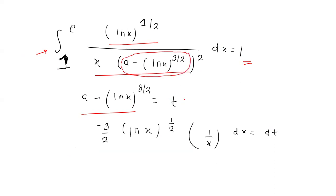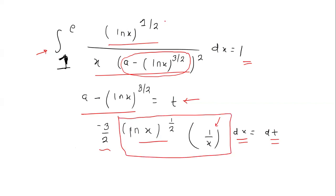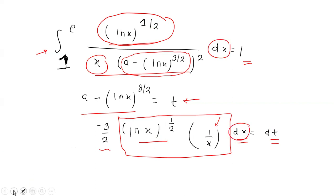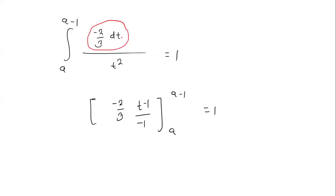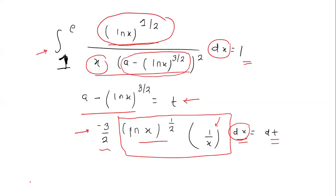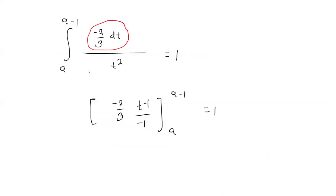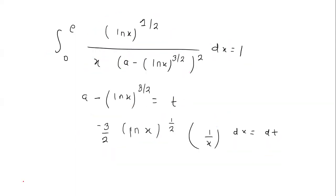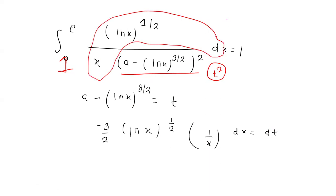What we can do is take t = a minus ln(x)^(3/2) as a substitution variable. Differentiating both sides, we get dt = minus (3/2) times ln(x)^(1/2) times (1/x) dx. You can see that ln(x)^(1/2) multiplied by (1/x) dx appears in the integral, so the whole expression can be written in terms of dt, giving minus (2/3) dt, and the denominator becomes t squared.